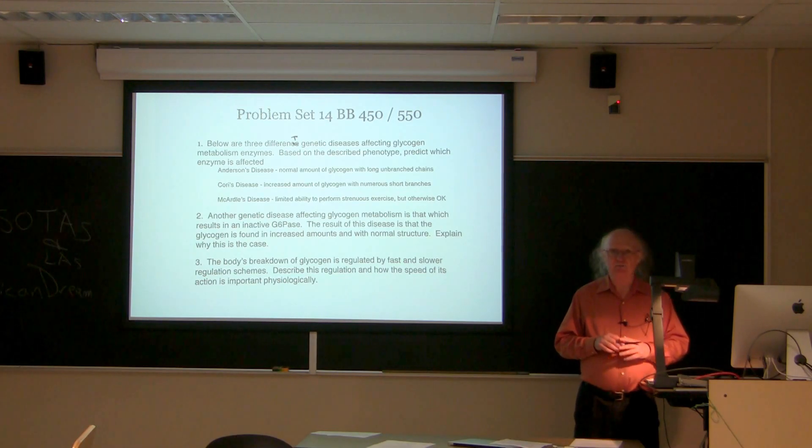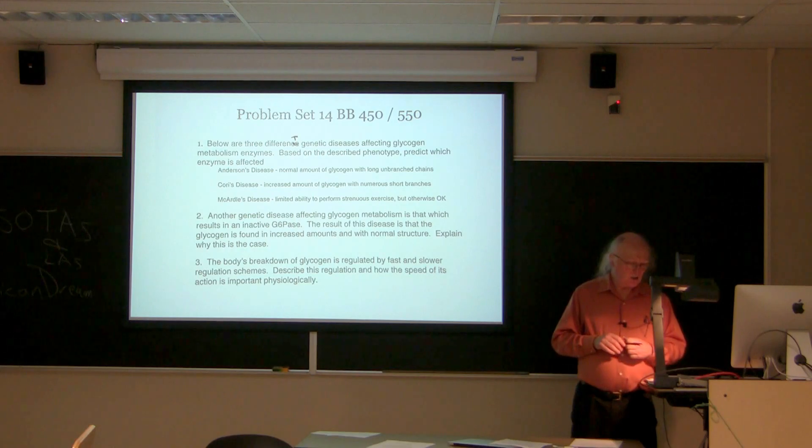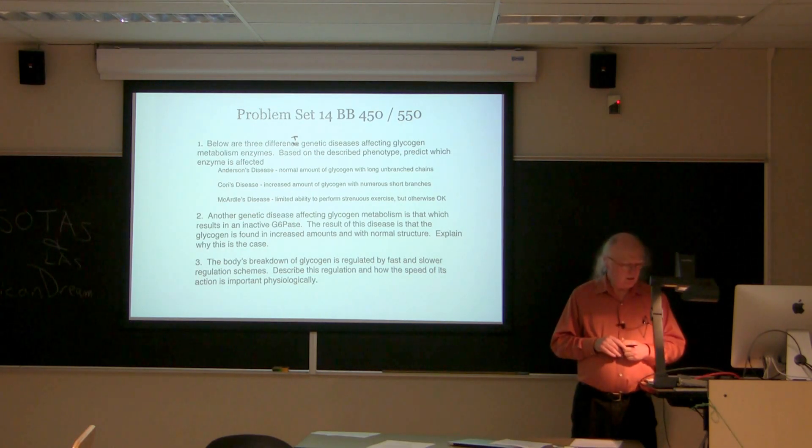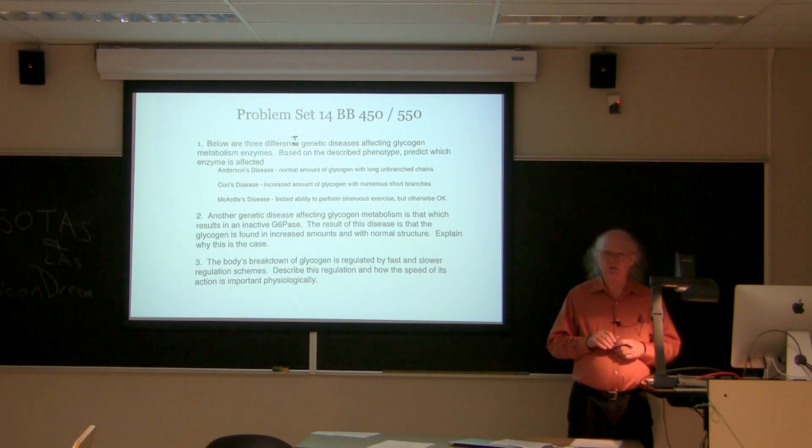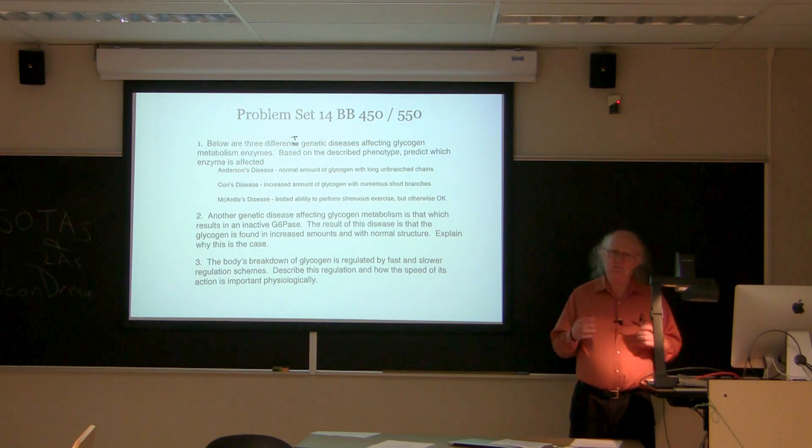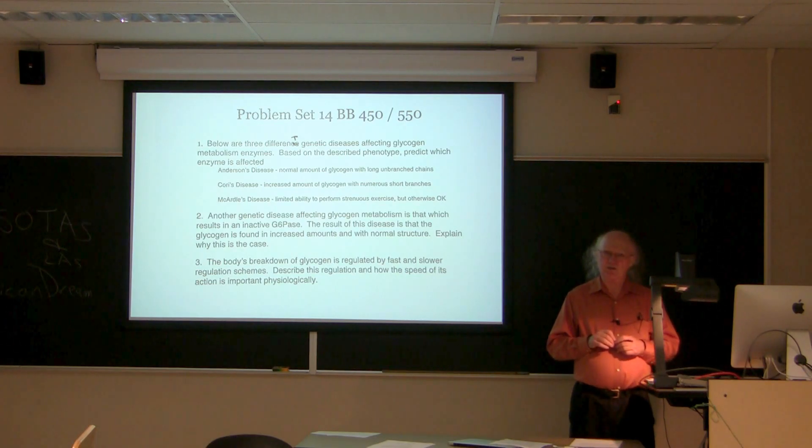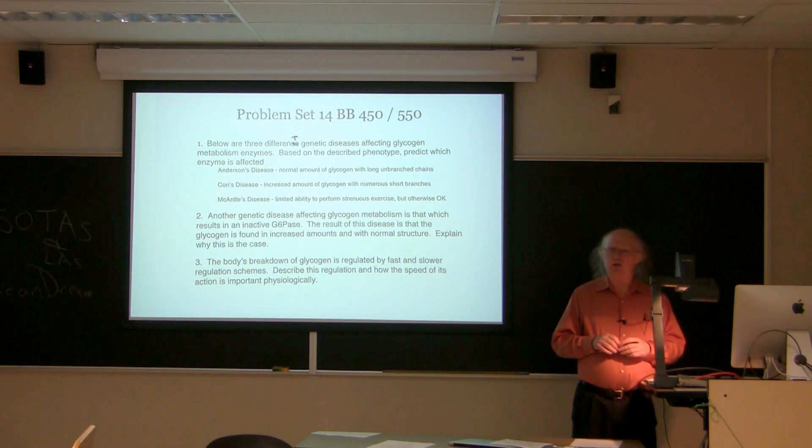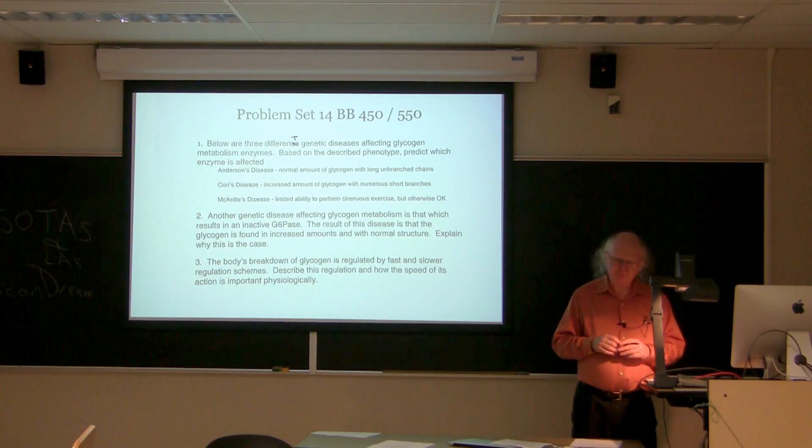Now McArdle's disease, the last one that's there is the hardest one to figure out. And in fact, it's a little hard to figure out intuitively what's going on. All that's given is that the people with this disease have a limited ability to perform strenuous exercise, but otherwise they're okay. But we have to think a little bit about what's involved in strenuous exercise. So in strenuous exercise, of course, the body is needing glucose as much as possible. And one of the sources of glucose is that of glycogen.